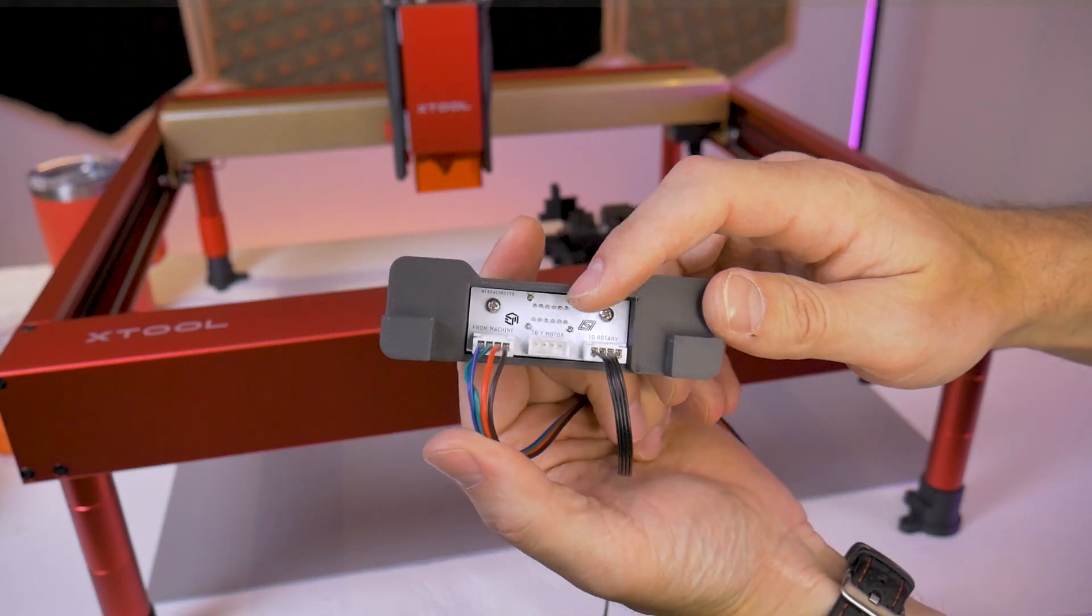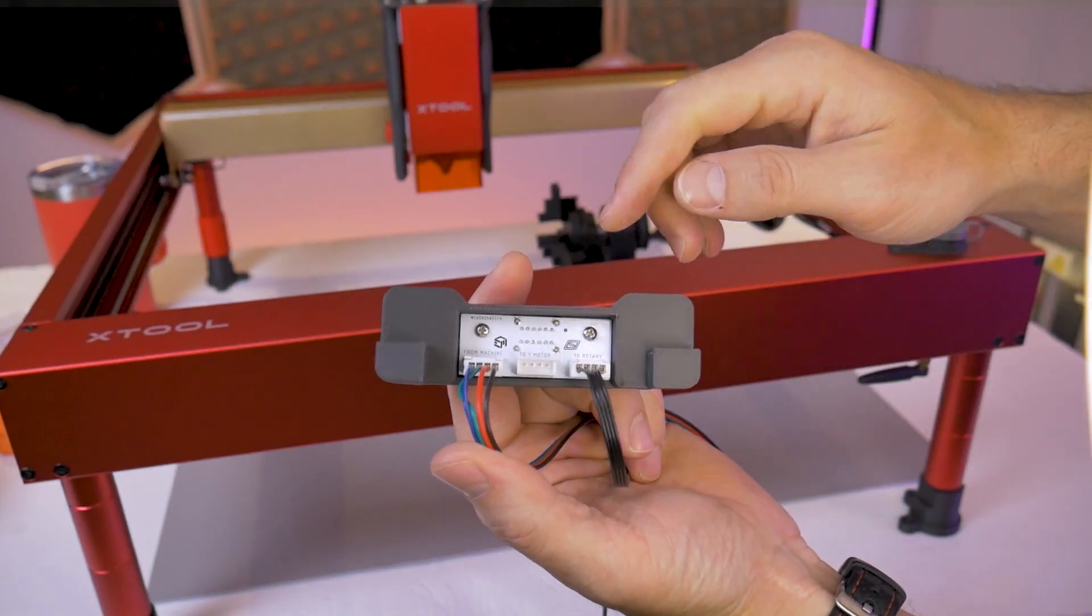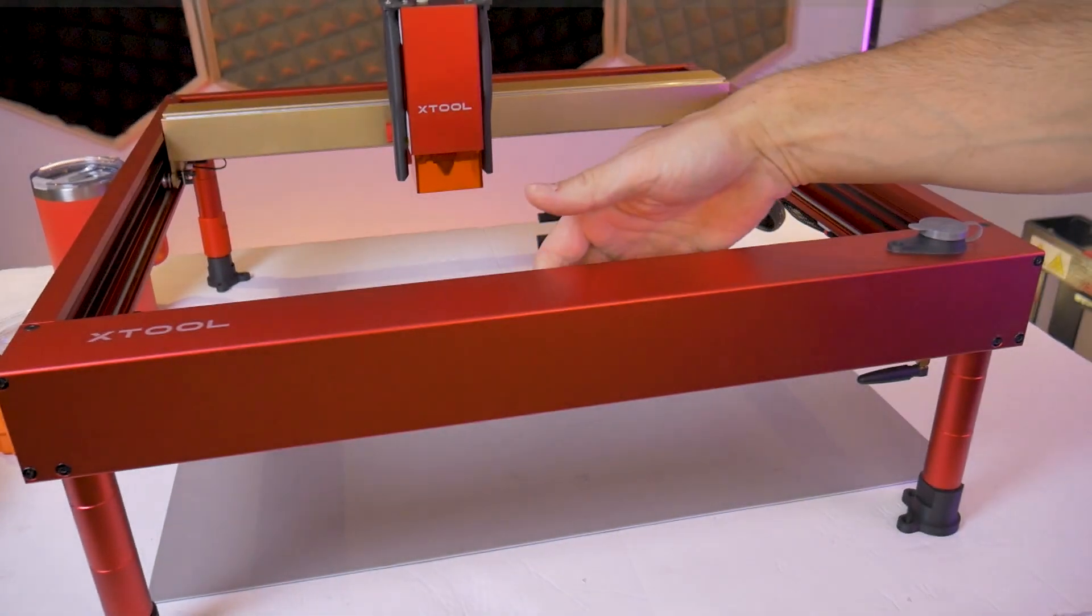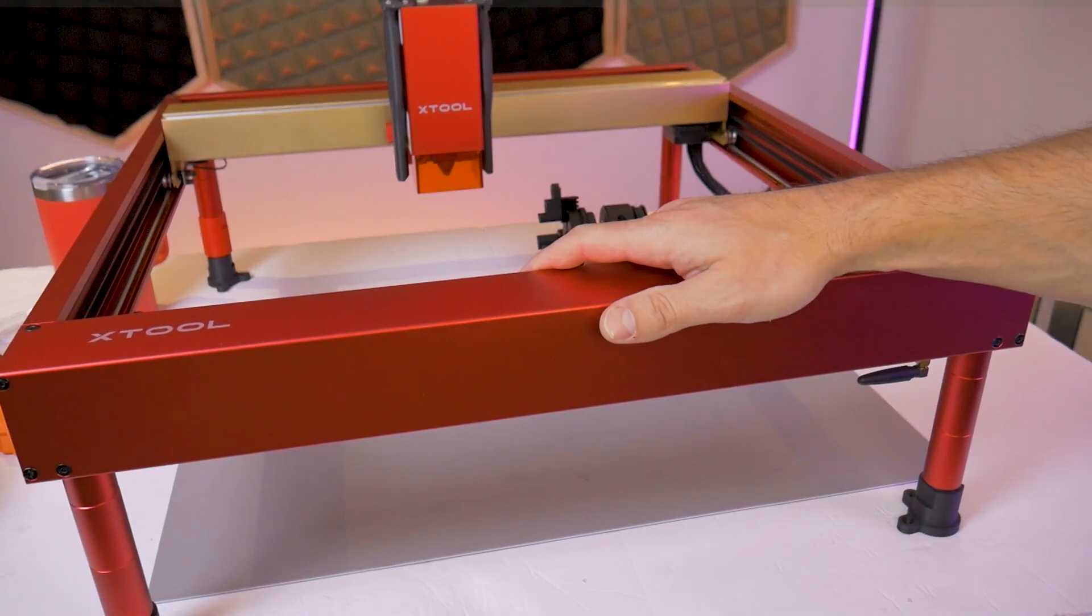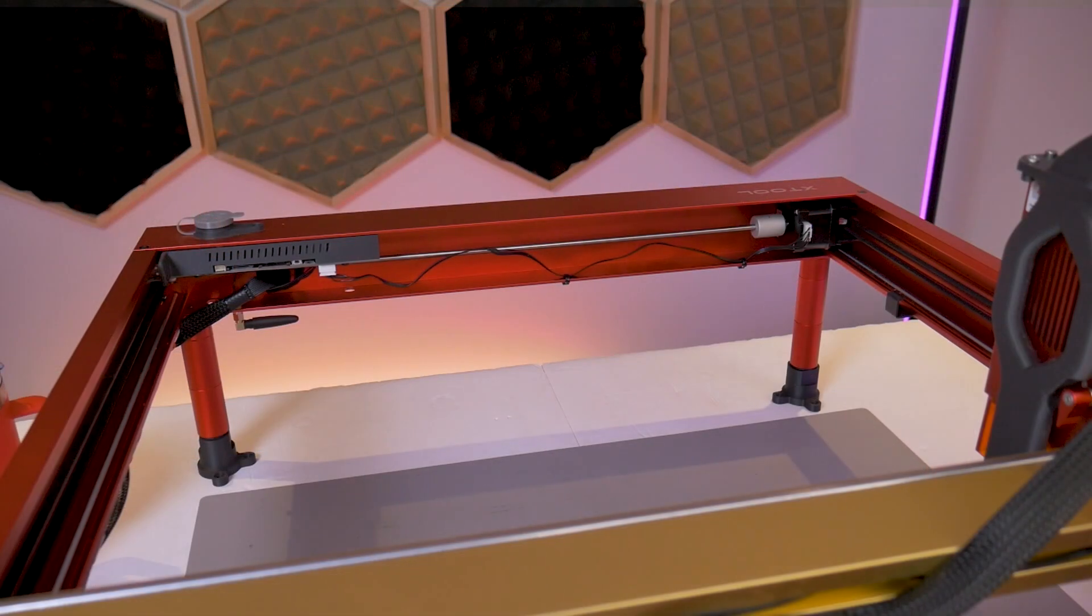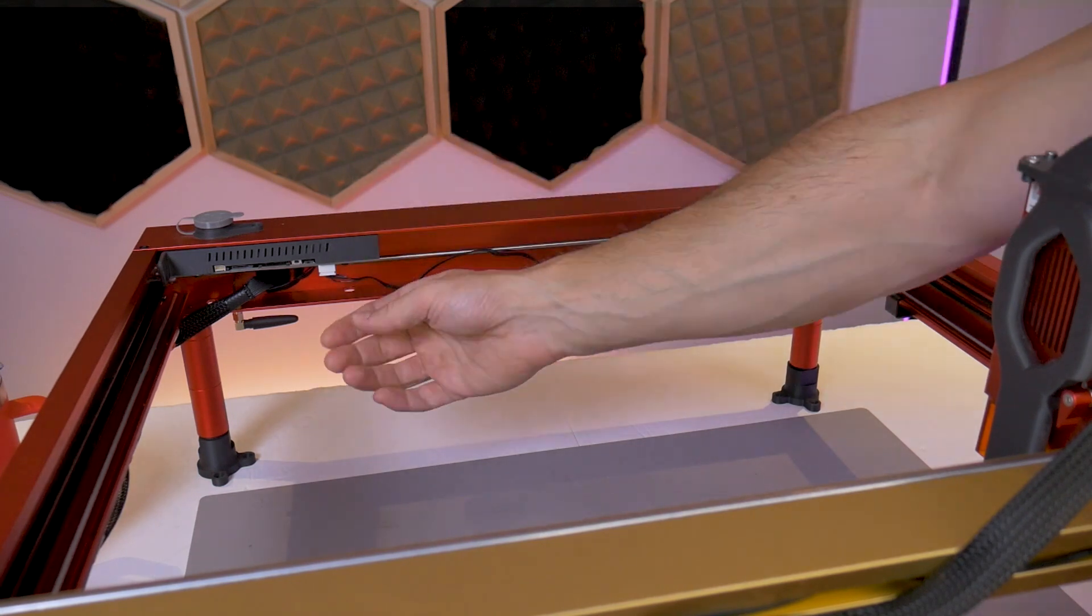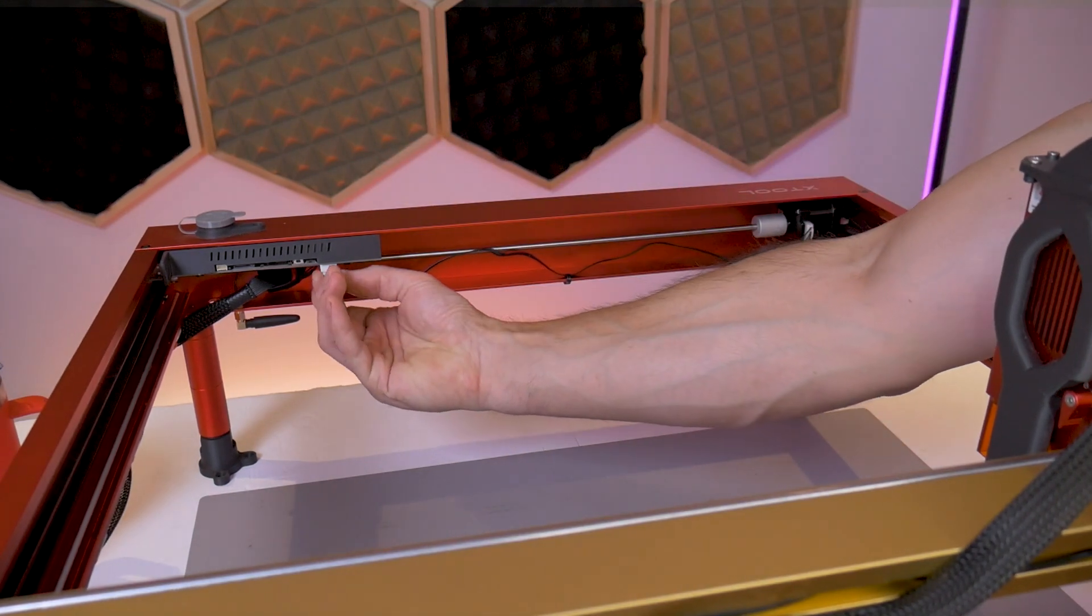The middle connector label reads 'to Y motor' and we're going to grab that connector from the inside of the front frame of the X-Tool. Now we can unplug the Y motor connector from the main board for the very last time.